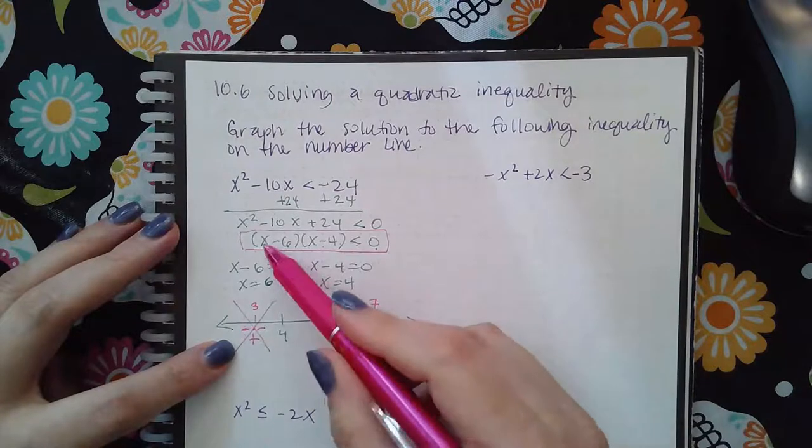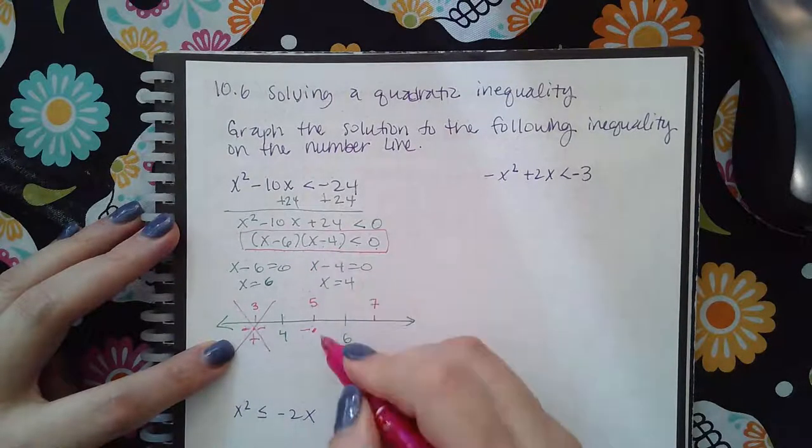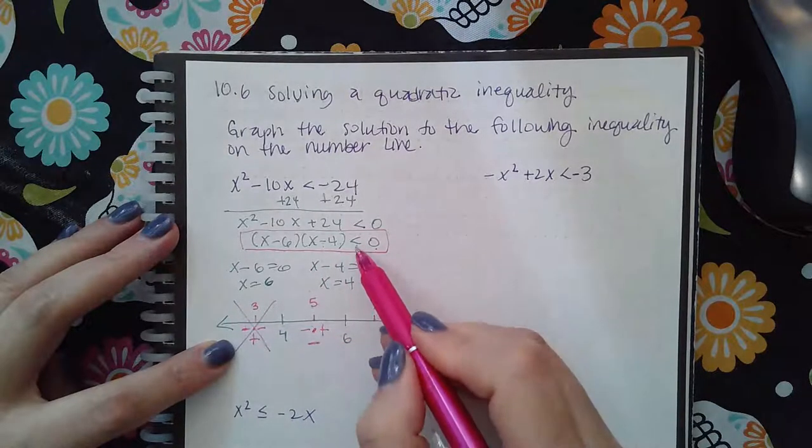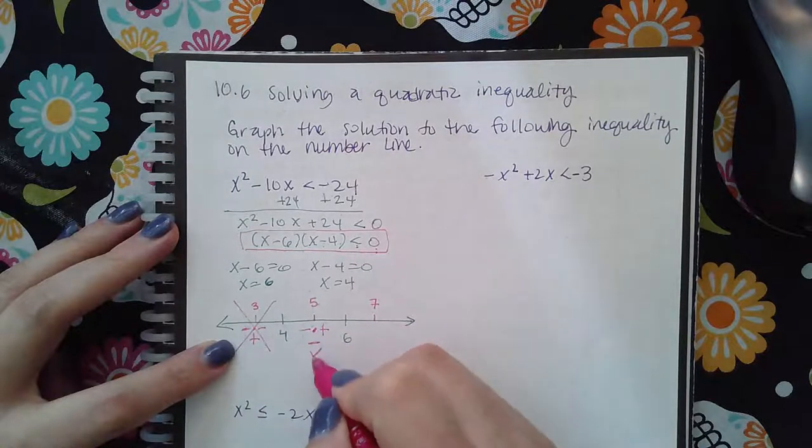When I plug in five, five minus six is a negative, and five minus four is a positive. So when I multiply those I get a negative, and negatives are less than zero, so this section does work.